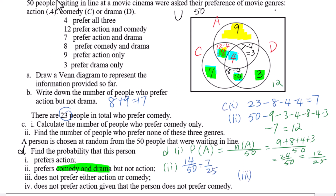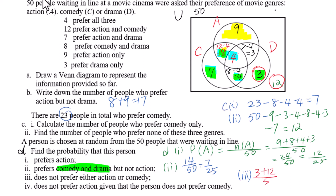For part d3, find the probability that this person doesn't prefer either action or comedy. The people who don't prefer either action or comedy: 3 plus 12 gives 15 over 50, which equals 3 over 10.